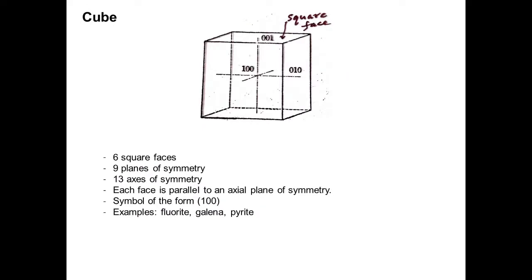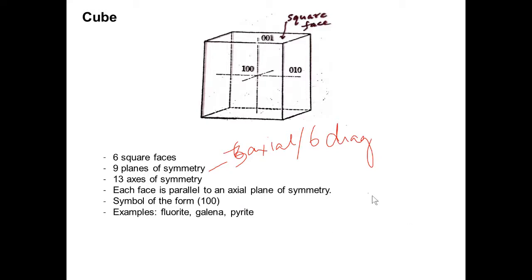The first form is the cube. A cube has six square faces. It has nine planes of symmetry — three axial and six diagonal.